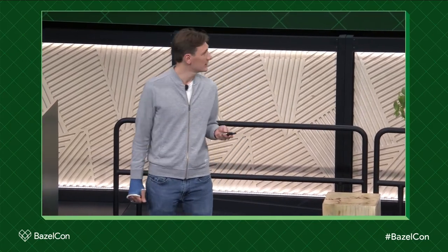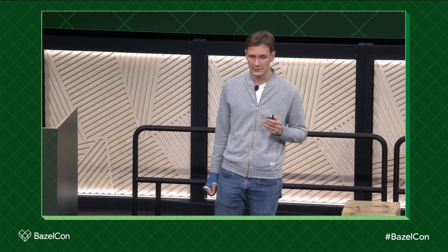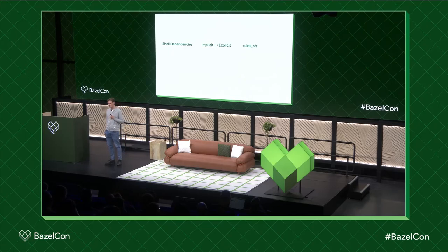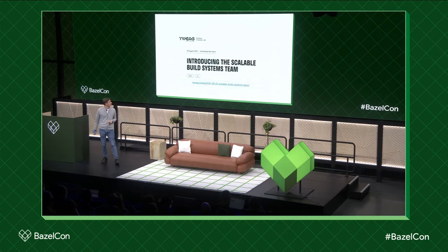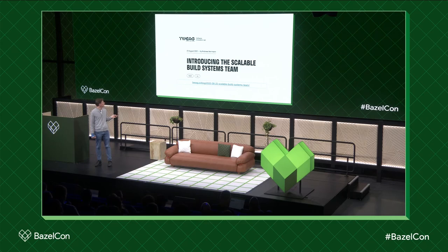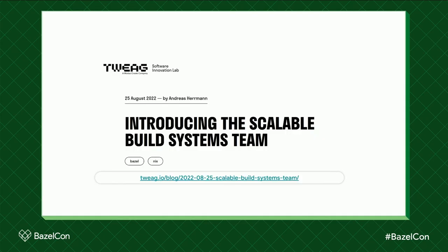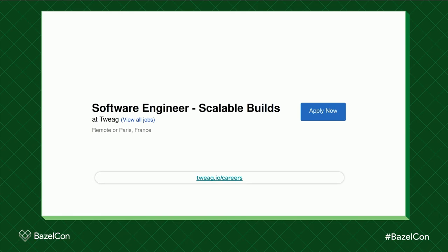In conclusion: shell tools are often forgotten, but they are dependencies too. Make all your dependencies explicit — avoid implicit dependencies to get correct builds. You can use rules_sh's shbinaries rule to do this for tools and make them easily accessible in gen rules and other shell script-like actions. I work at Tweak in the Scalable Builds group — if you're interested in what we do or would like to work with us, take a look at our blog post introducing the team or get in touch. We're also hiring, so check out the career page or get in touch with me. Thanks.